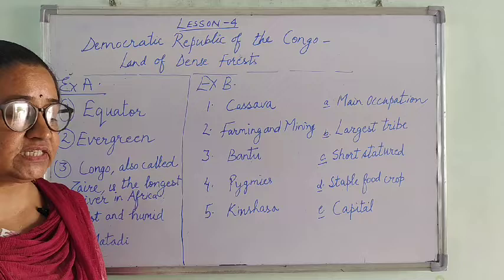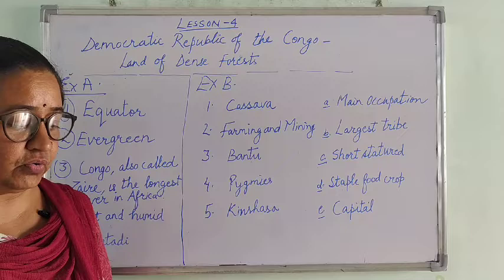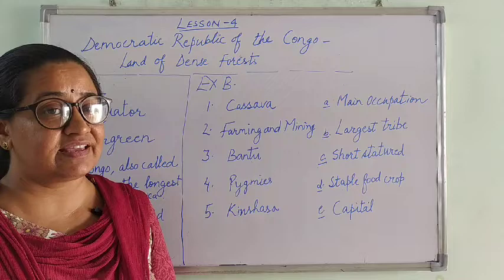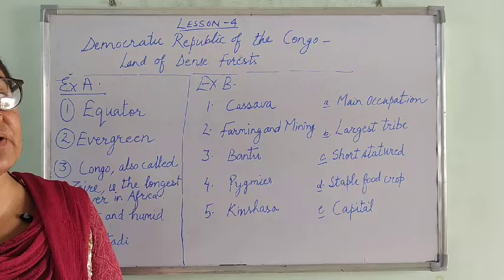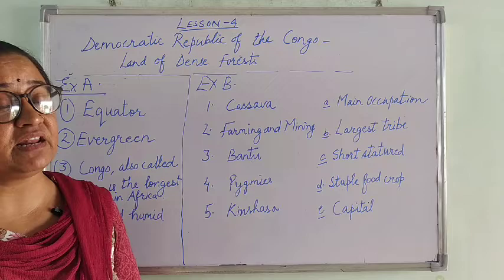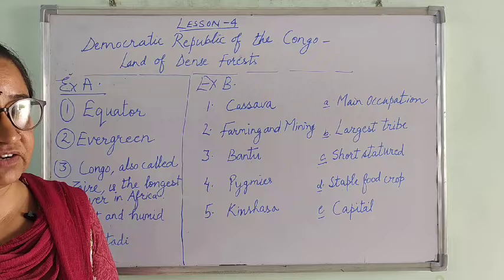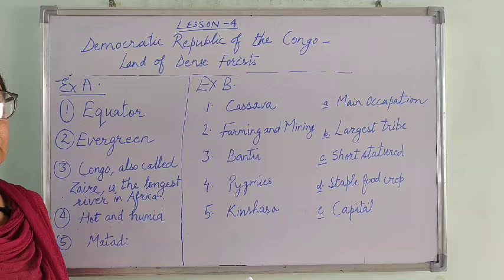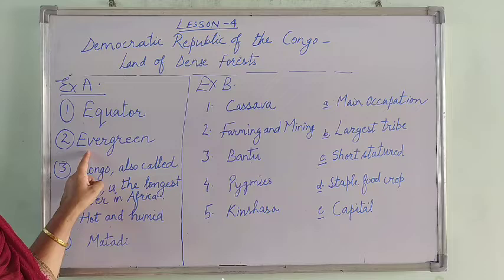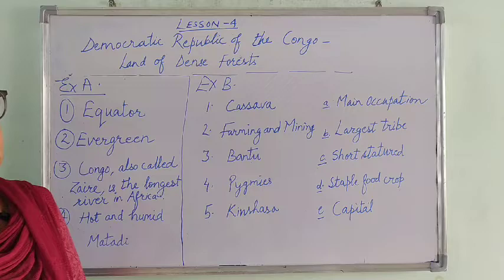Question 2: Which is the characteristic vegetation of Democratic Republic of Congo? The vegetation here is thick forest, and these forests remain green throughout the year — so they are called evergreen forests. The land is covered with evergreen forest. Tick Option A — Evergreen.